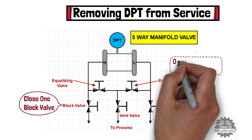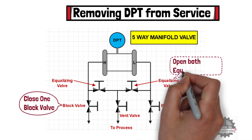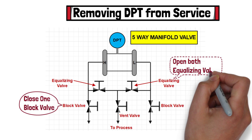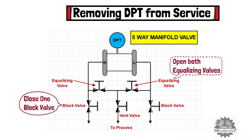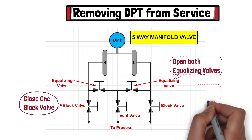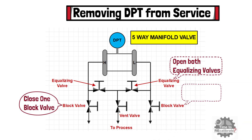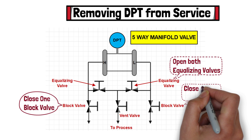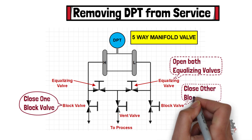Then open both equalizing valves — which one first does not matter. After this, close the other block valve.